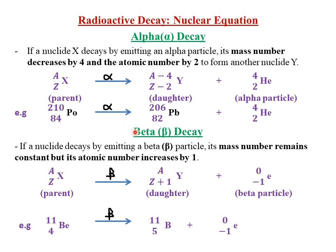The second type of radiation is the beta particle — so we look at beta decay. Unlike alpha decay, if a nuclide decays by emitting a beta particle, its mass number remains constant but its atomic number increases by 1. In our previous lesson we said that a beta particle is represented by an electron, which has no mass number (mass number is zero) and atomic number of negative 1. Because the atomic number is negative 1, the daughter nuclide must increase its atomic number by 1 for the equation to balance.